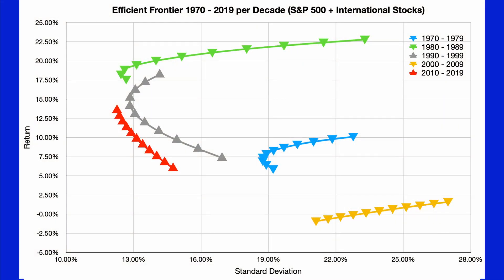It doesn't always work out this way though. Let's look at the efficient frontier of U.S. and international stocks for each decade between 1970 and 2019. This scatterplot has a lot of data — we have a separate series for each decade. A triangle facing up means the U.S. outperformed international during that decade; a triangle facing down means international outperformed the U.S. We can see in three decades international outperformed U.S., and in two decades U.S. outperformed. Diversifying across these asset classes didn't help as much in the most recent two decades, where the efficient frontier is basically a straight line. This is meant to show that the correlation and risk-return trade-offs vary over time.